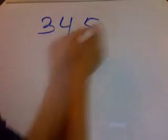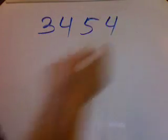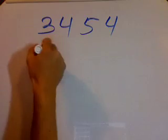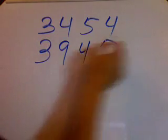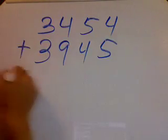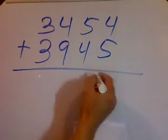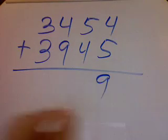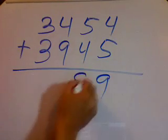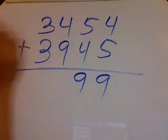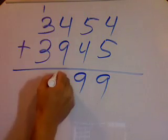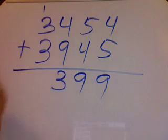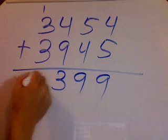Let's pick some numbers: 3, 4, 5, 4, 3, 9, 4, 5. Here 4 plus 5 is 9, then 5 plus 4 is 9, and 4 plus 9 is 13. Then 3 and 3 is 6, and 1 is 7.